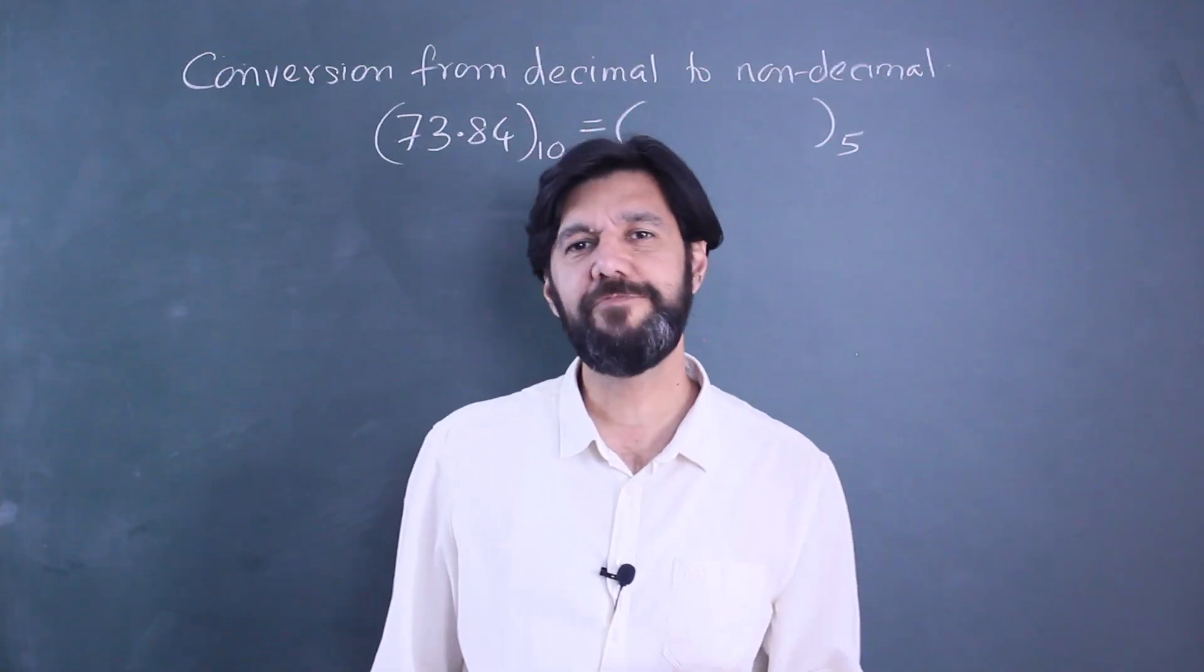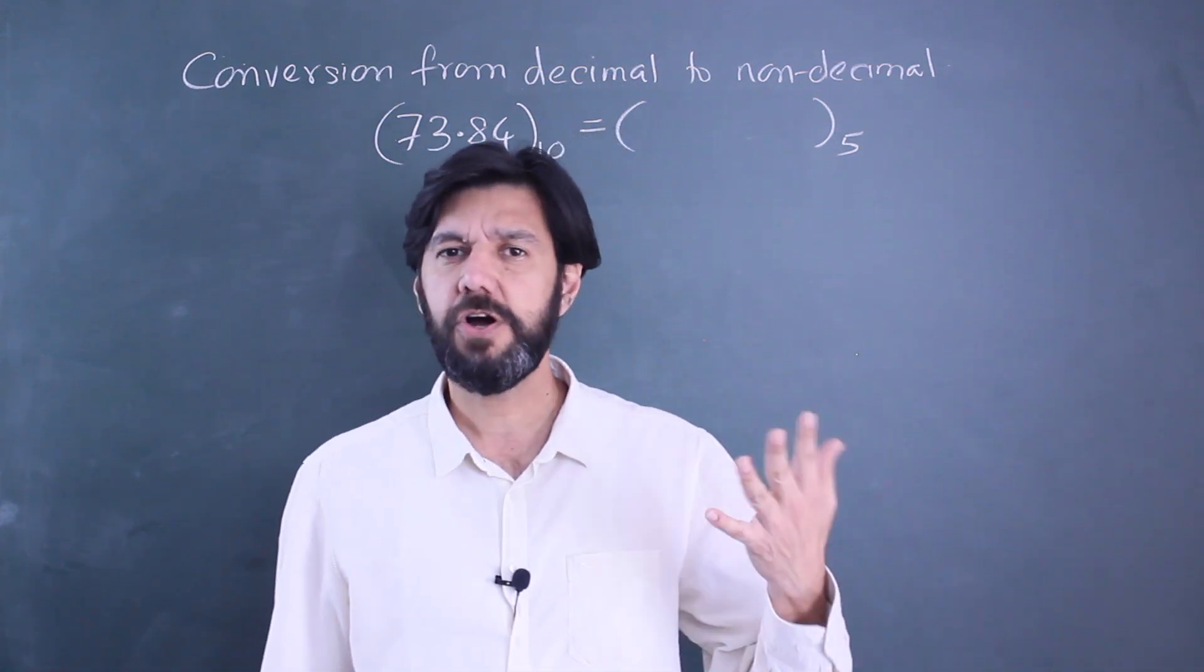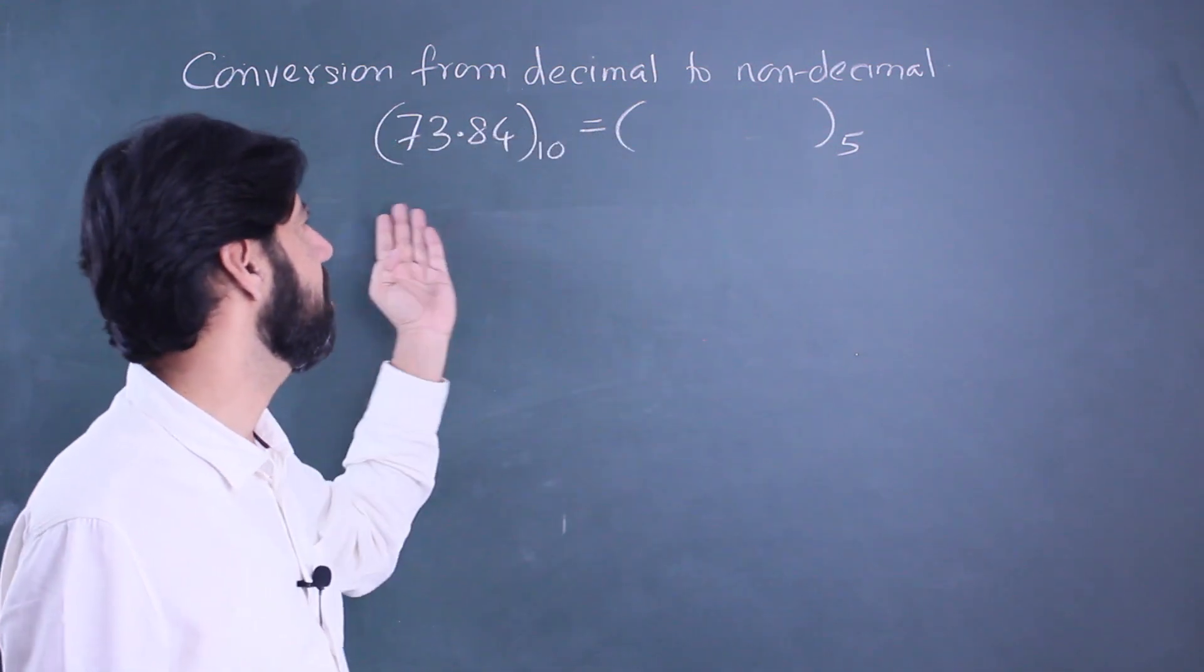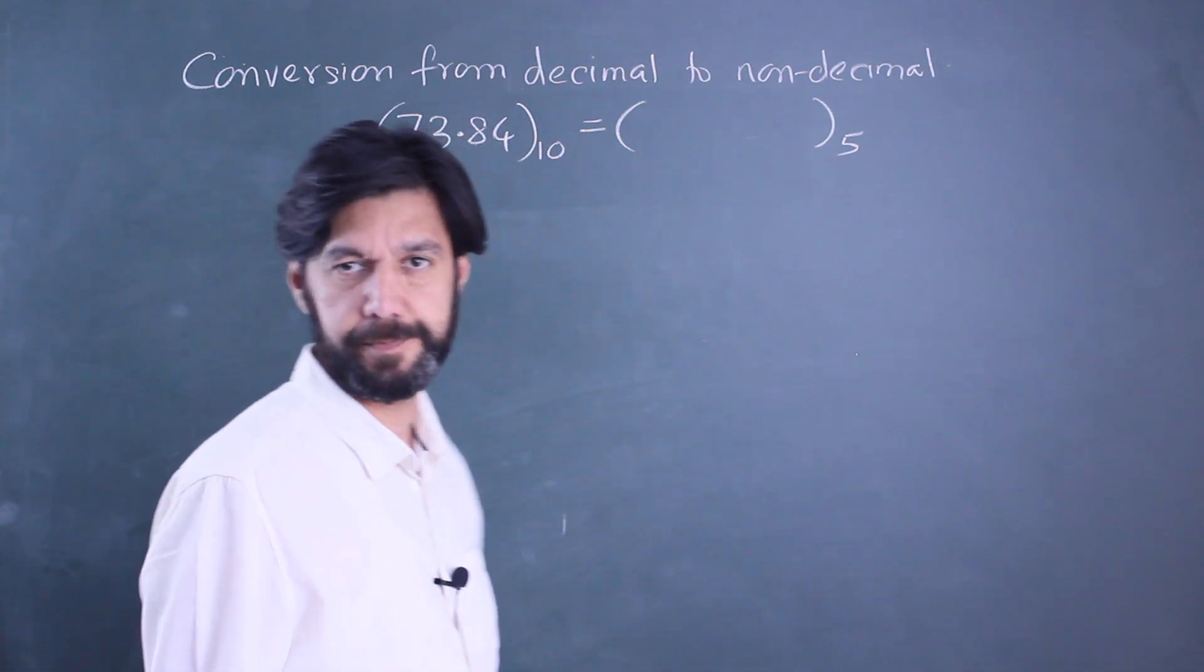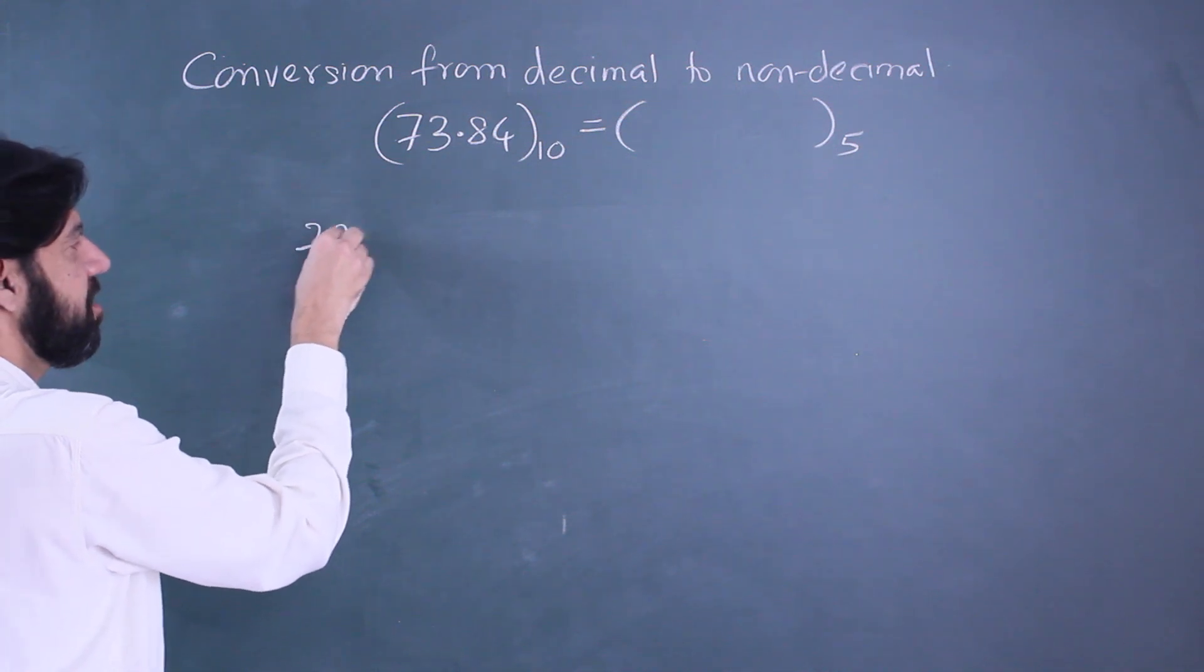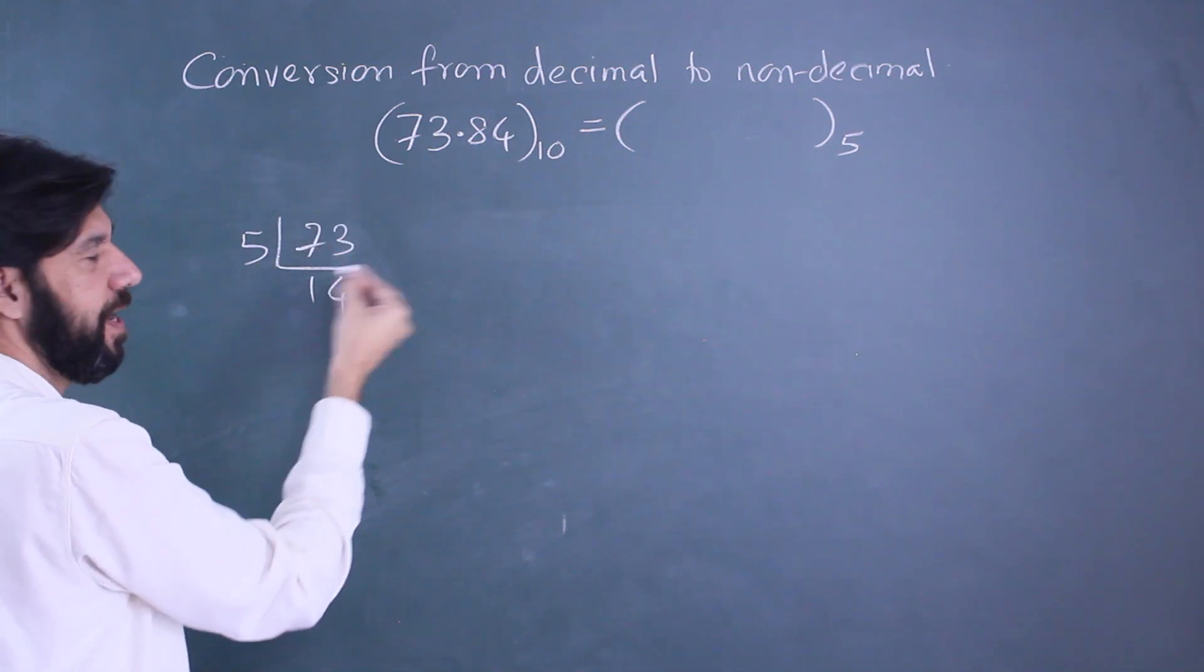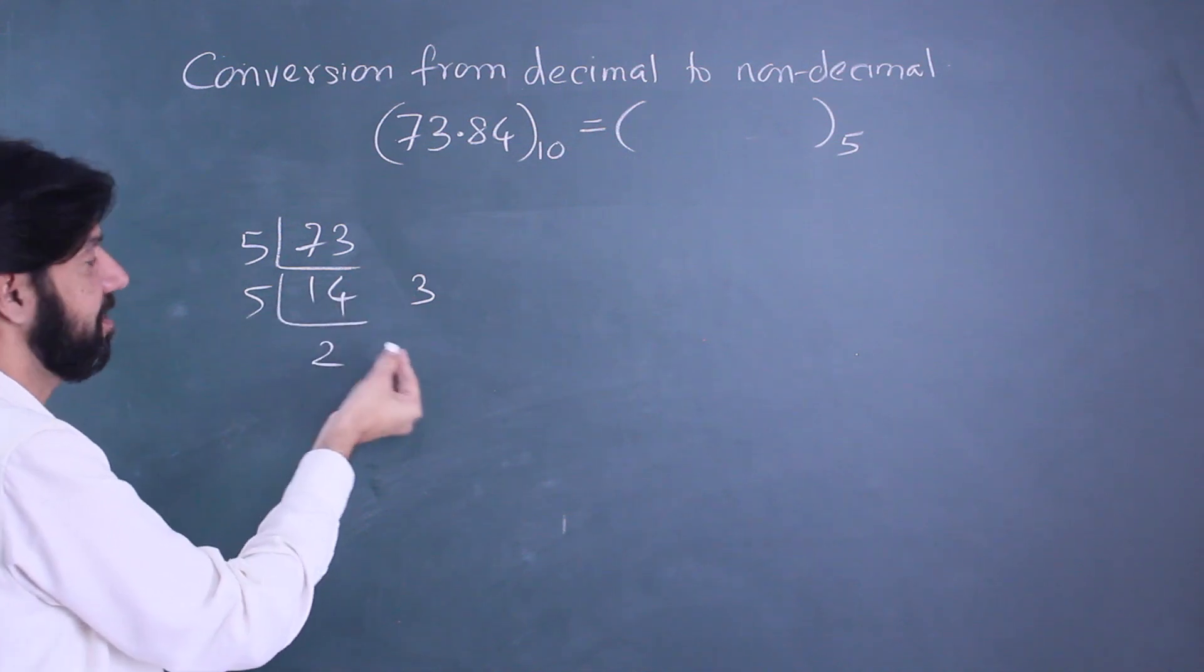The bases that I've been using are the ones that I've talked about till now: binary, octal, hexadecimal. But then theoretically the base could be anything. So here in this question I need to convert the decimal number into a base 5. Let's do it very quickly. Divide by 5: 5 ones are 5, 23 fours are 20, remainder of 3.